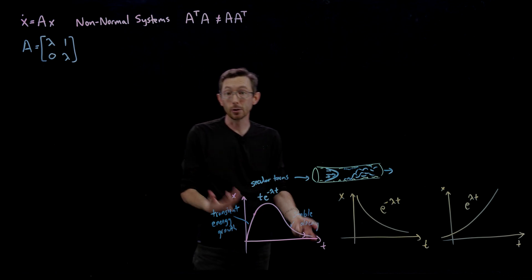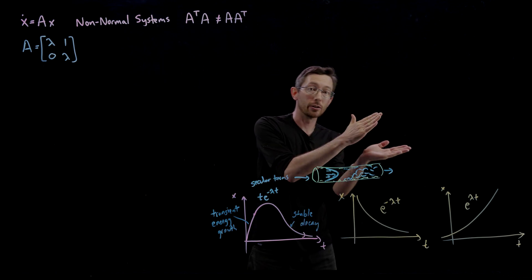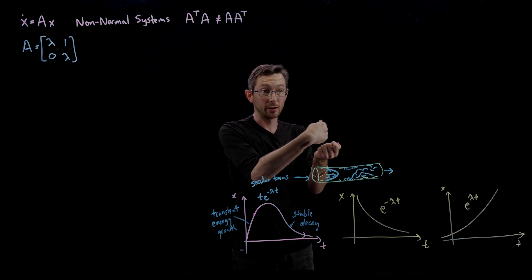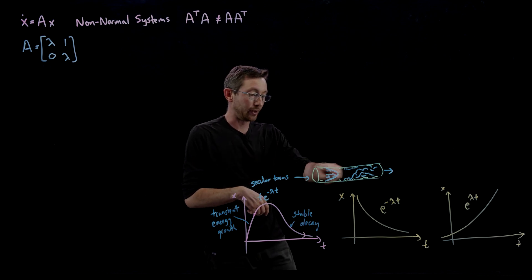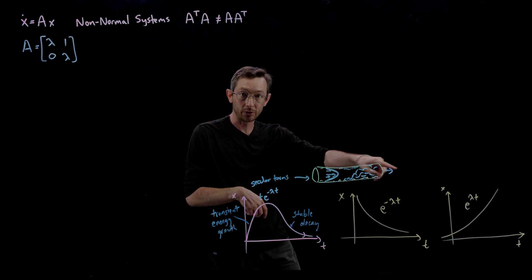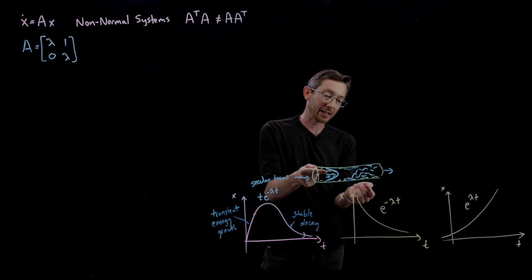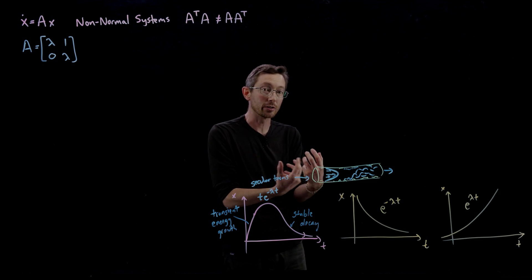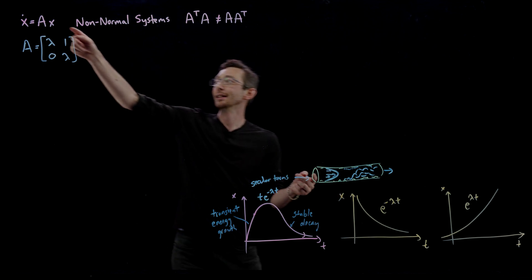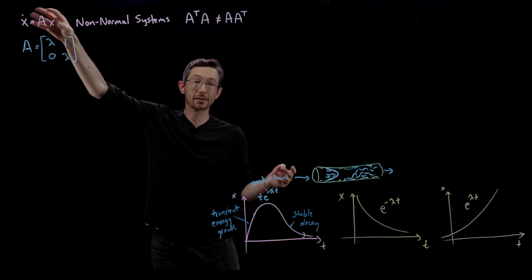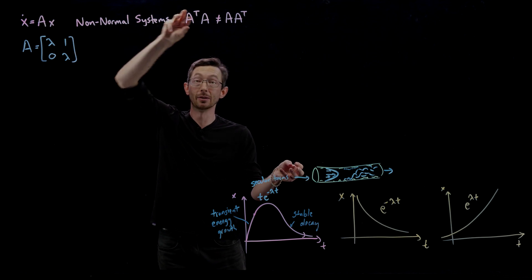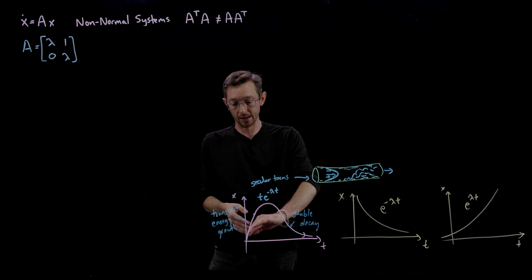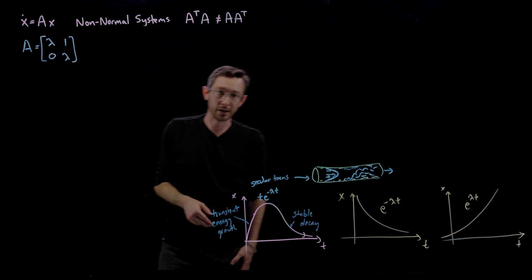For example, highly sheared fluid flows — like pipe flow, where you have much faster flow in the middle and slower flow on the outside — are shear-dominated flows. The A matrix for the linearized system of such a flow is going to be non-normal and give rise to this kind of interesting behavior.